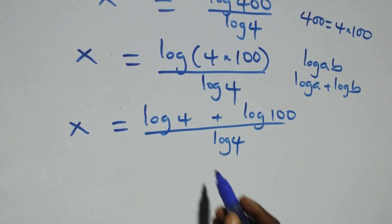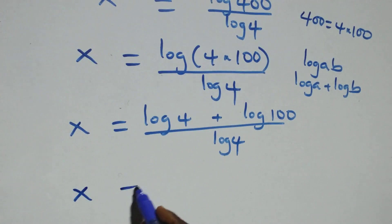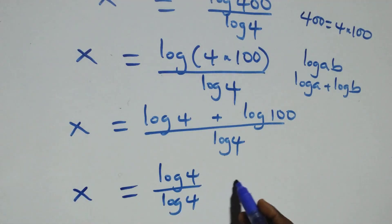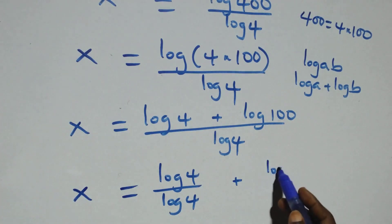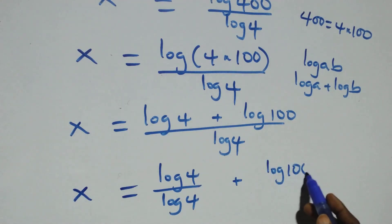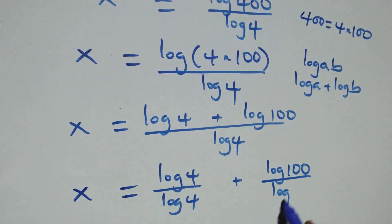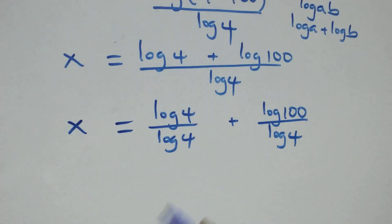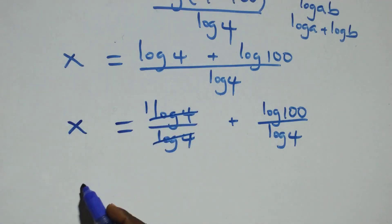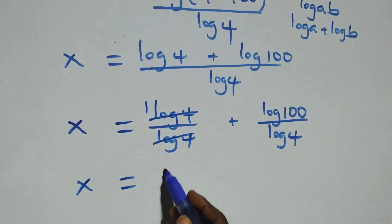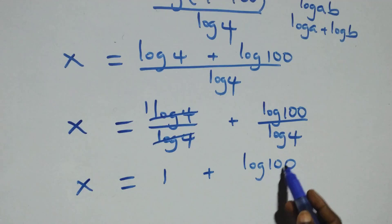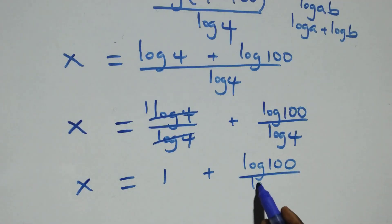We separate this into two fractions: x equals log 4 over log 4 plus log 100 over log 4. The log 4 terms cancel each other, leaving 1, which implies x equals 1 plus log 100 over log 4.